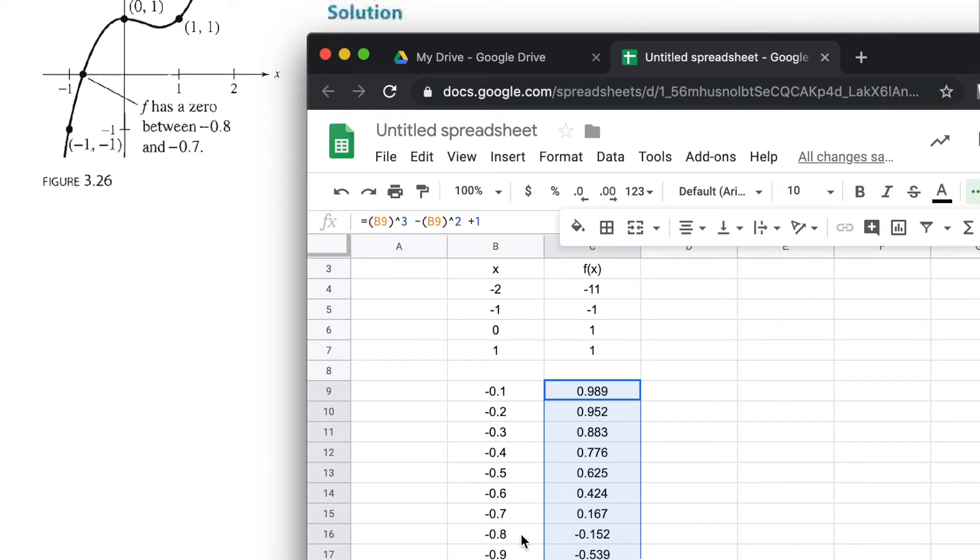But as we head more negatively to the left, you see that we cross over from being positive to negative. So somewhere between -0.7 and -0.8, our zero is lurking in there because it's between -0.152 and positive 0.167.